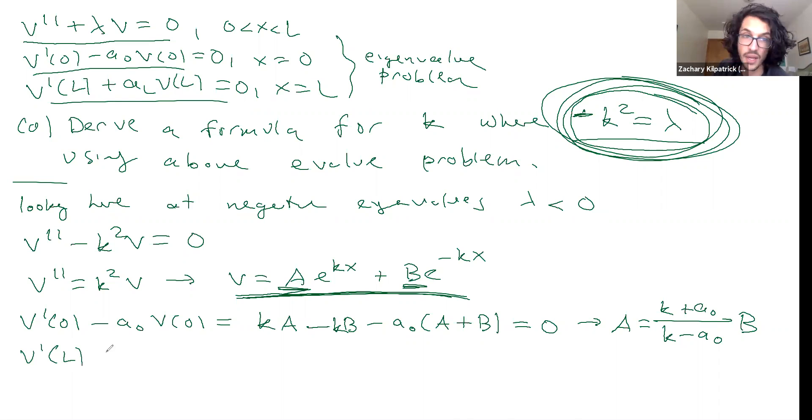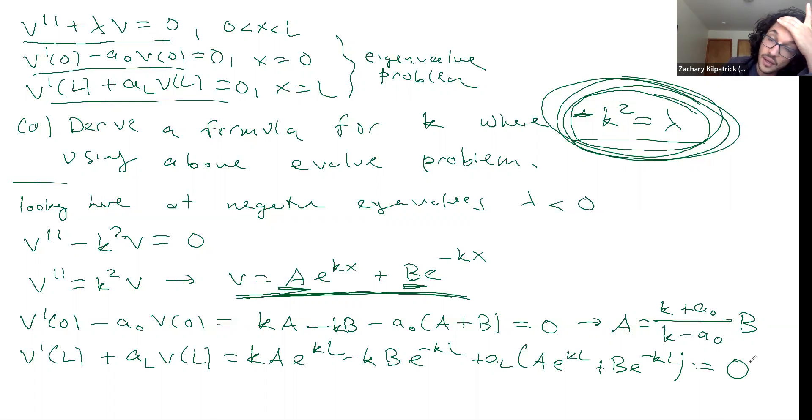So now I have a restriction on these free constants in front of my exponentials. The next thing I can do is plug into my other boundary condition, and I end up with kAe^(kL) - kBe^(-kL) + aₗAe^(kL) + aₗBe^(-kL) = 0.